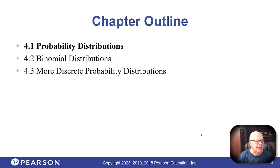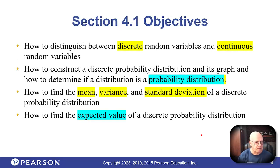In this section or chapter, we're going to talk about probability distributions in general, binomial distributions, and then a couple of other special ones. First of all, we have to clear out some things, and the first thing we're going to hit is discrete versus continuous.